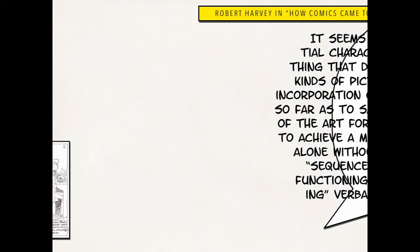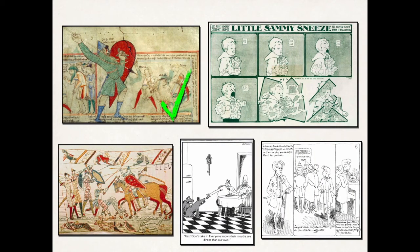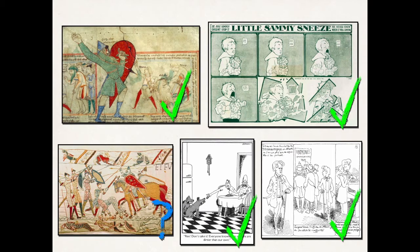So what counts for Harvey? St. Stephen Harding's Bible would count — we've got an interesting blending of verbal content via the Bible verses and the illustrations, the visual content. Likewise, Little Sammy Sneeze. The Bayeux Tapestry is a little bit more complicated — there is some verbal content, but it's mostly just captions, titles over a few spots, so I'm not sure it would count. For Robert Harvey, single panel cartoons can count. His argument is that because the joke isn't funny with just the picture or just the title, but requires them working together, they count as comics. And likewise, Rudolph Topfer would work under Harvey's definition.